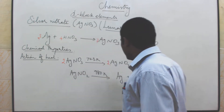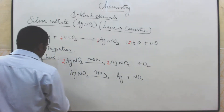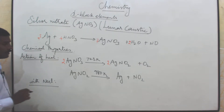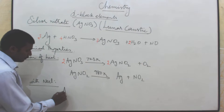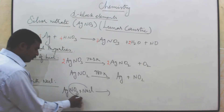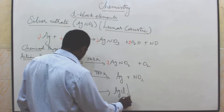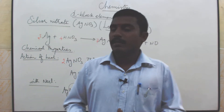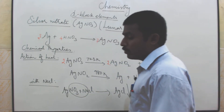Silver nitrite on heating gives silver metal. Next, silver nitrate reacts with sodium chloride (NaCl) to give AgCl as a precipitate and sodium nitrate (NaNO3) remaining in solution. So when you add common salt (sodium chloride) to a silver nitrate solution, you get a silver chloride precipitate and the remaining product is sodium nitrate.